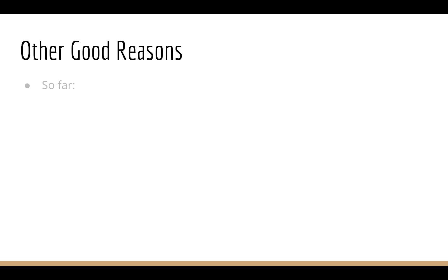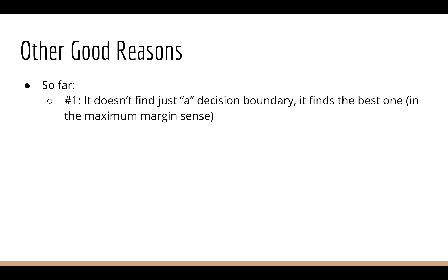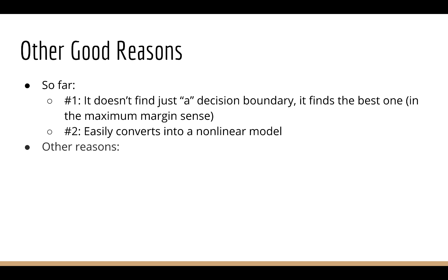So those are two good reasons to use the SVM. First, the SVM doesn't just find some decision boundary — it finds the best decision boundary. And second, the SVM can automatically be converted into a nonlinear kernel machine that yields nonlinear decision boundaries which fits complex real-world data. A couple other good reasons to use SVMs are as follows. One problem with some other machine learning algorithms is that they can get trapped in local optima. The SVM problem has only one global optimum.